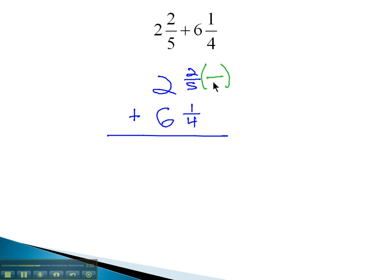So, the denominator of 5 needs to be multiplied by 4, numerator and denominator. And the denominator of 4 needs to be multiplied by 5, numerator and denominator. This gives us 8 twentieths plus 5 twentieths. Adding the numerators, that gives us 13 twentieths.